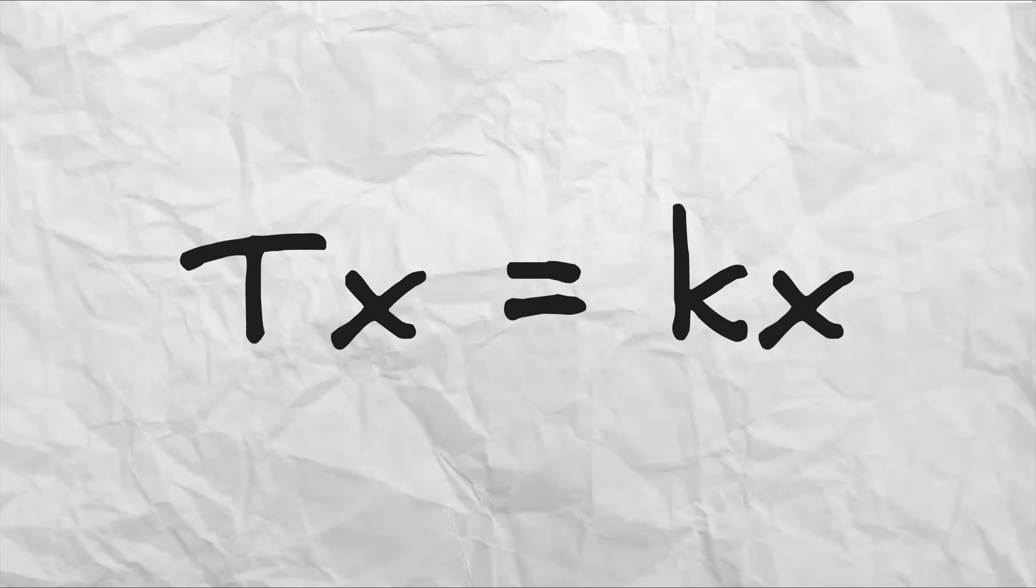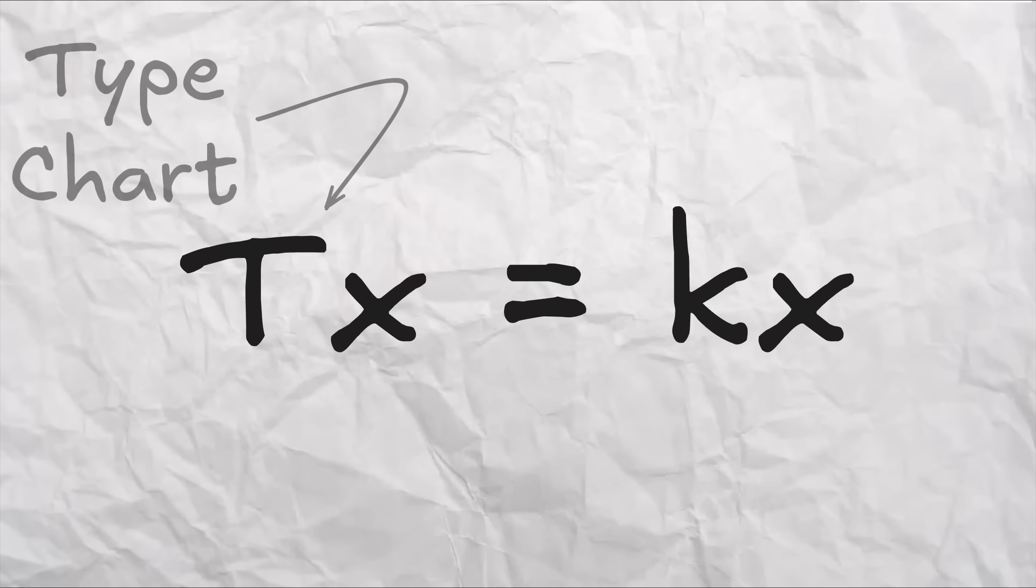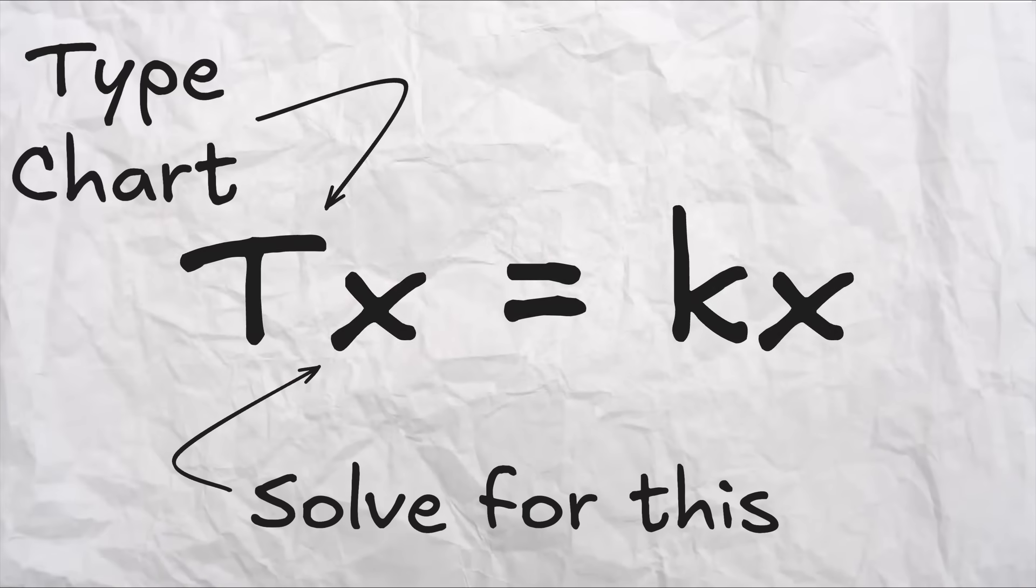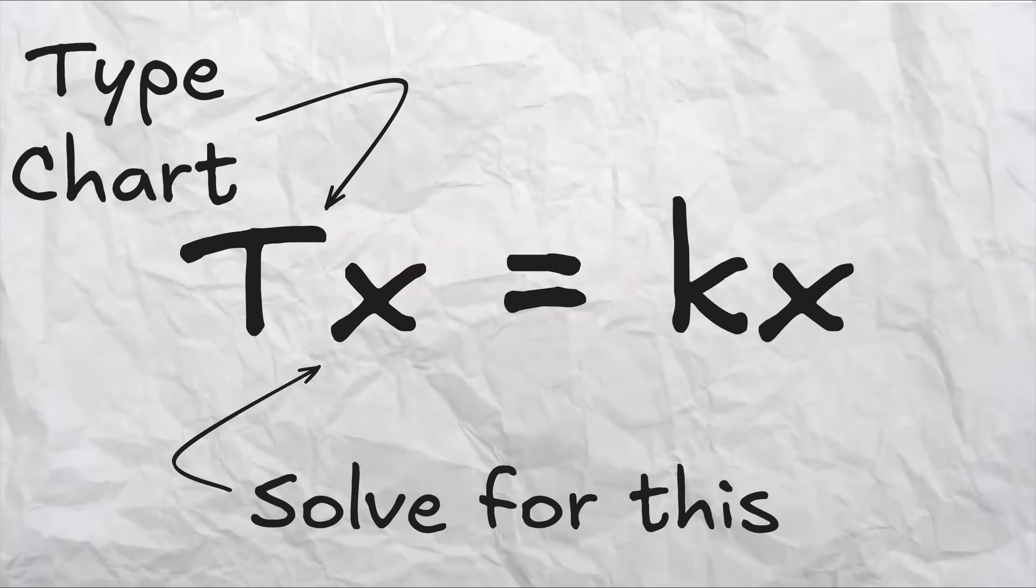T is the type chart and solving for x gives us a vector telling us which types are the weakest and which types are the strongest.